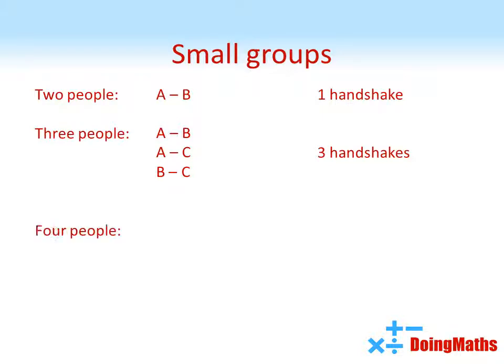Now let's extend it to four people. So again let's start off by thinking about person A. There are three other people for them to shake hands with: B, C and D. Now let's think of person B. He's already shaken hands with person A, so that just leaves C and D for him to shake hands with.